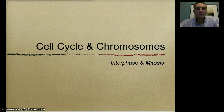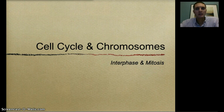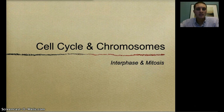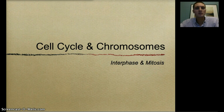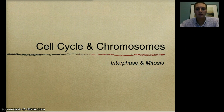In this video, we're going to talk about interphase and mitosis, really two different mechanisms that make up the cell cycle. Cells, just like organisms, have a life cycle, and that's made up of two distinct phases: interphase and mitosis. We're going to take a closer look and see some of the things that happen during these two different phases of a cell's life cycle.